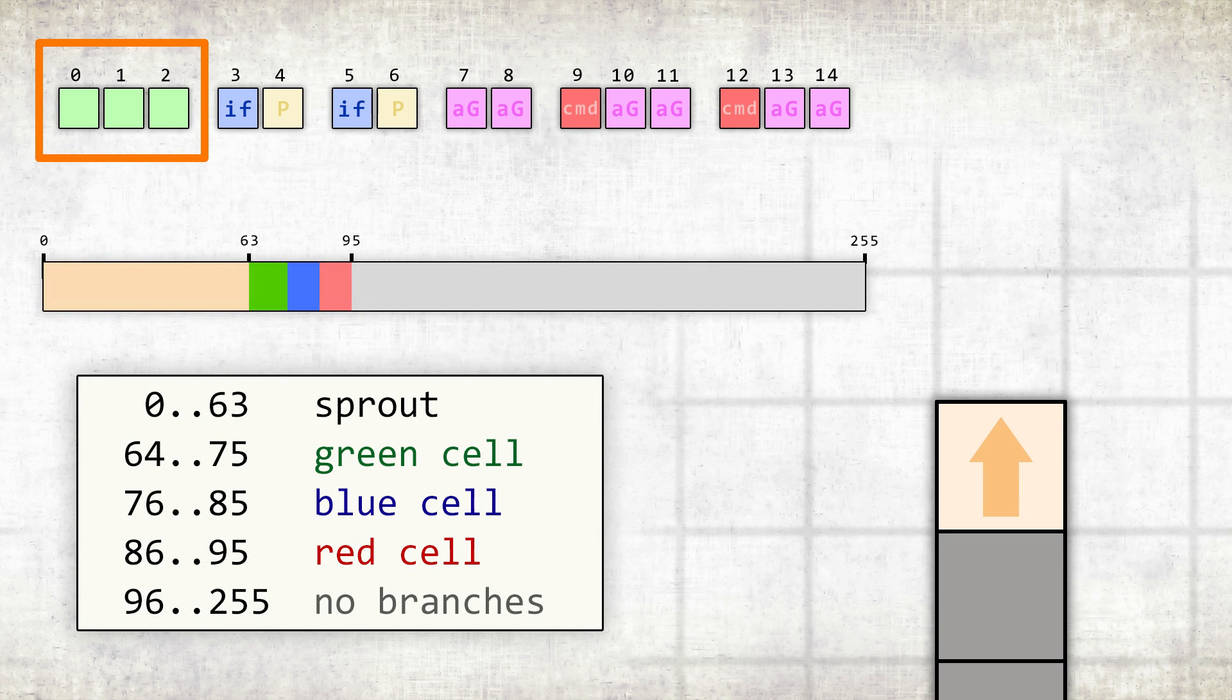The first three numbers determine the branches of a cell and their relative direction: left, forward and right. For example, the first number is 18. This means the cell will have a sprout in the left direction with active gene number 18. We take the remainder from dividing the number by 32. The second number is 79, so in the forward direction, we need to create a blue cell. The third number is 201, so we will not create any branches in the right direction.